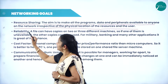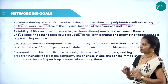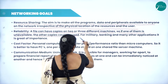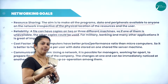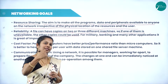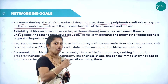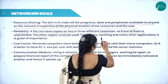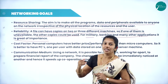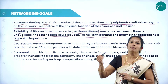The next goal is reliability. A file can have copies on two or three different machines, so if any one of them is unavailable, the other copies could be used. For example, consider the same data is present in three systems. If the data is deleted in one system, then from another system we can take that data back. This is used in military, banking, and many other applications.